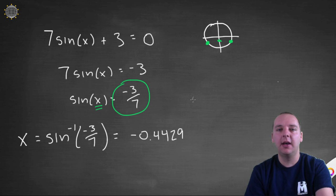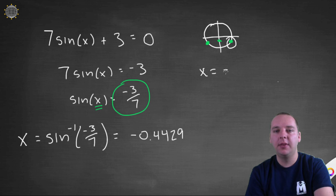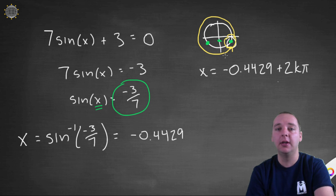Now, that's this angle here. So let me jot these down. We'll have x equals negative .4429 plus 2k pi. Because remember, you could go around a full time around the unit circle and wind up here again and again. You can add any multiple of 2 pi that you want.